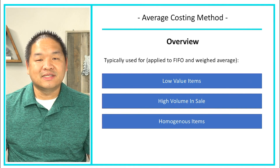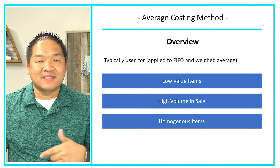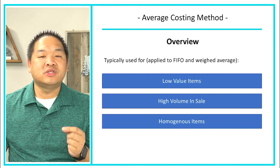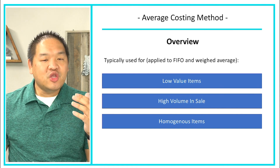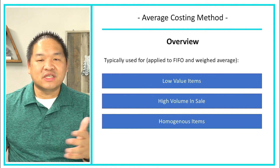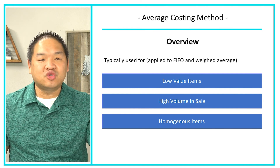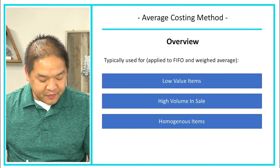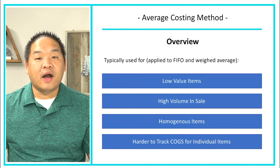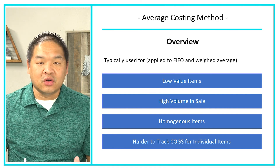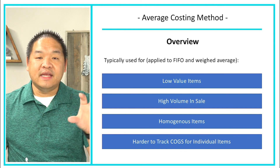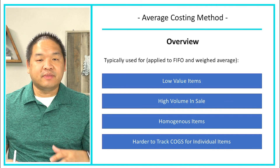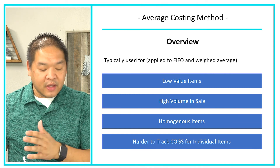The third characteristic is that weighted average is usually used for homogeneous items — items that are all the same. For instance, grapes or a bag of Lay's potato chips: all the bags weigh 20 ounces and are packaged the same way. Lastly, these items are usually harder to track individually from a cost of goods sold standpoint, so it's not practical to cost each item separately.